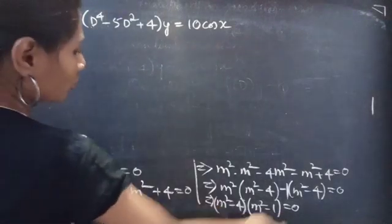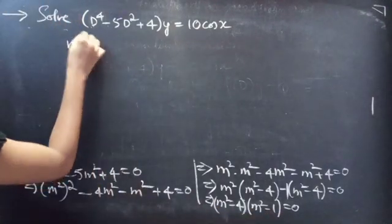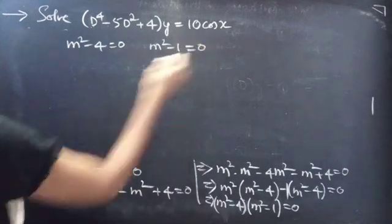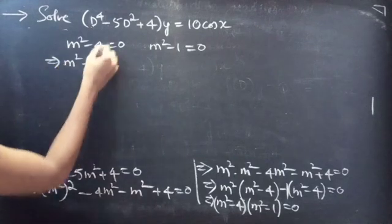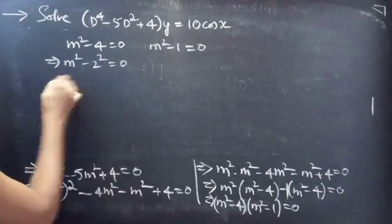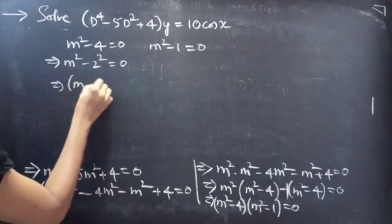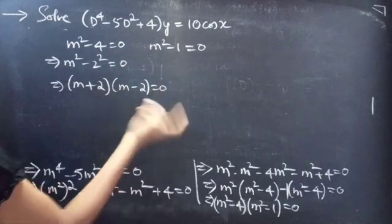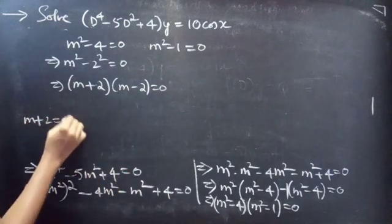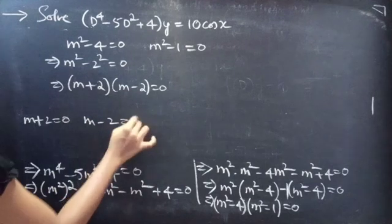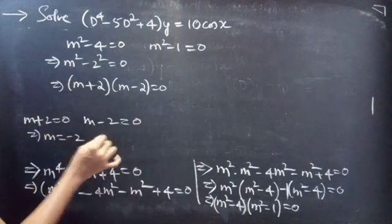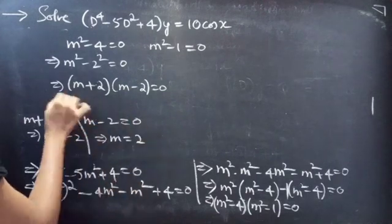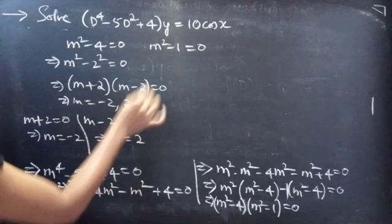Now equate each factor to 0. For m² − 4 = 0: this is of the form a² − b², so we write (m + 2)(m − 2) = 0. Equating each factor to 0 gives m + 2 = 0 and m − 2 = 0, yielding m = −2 and m = 2.